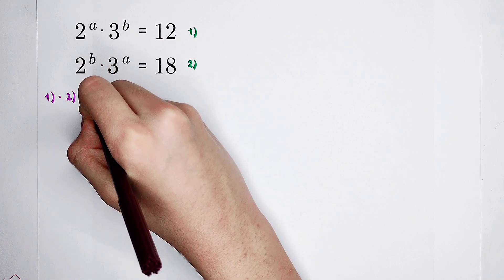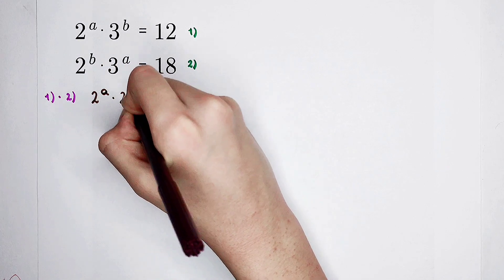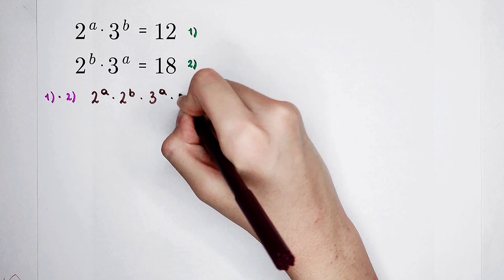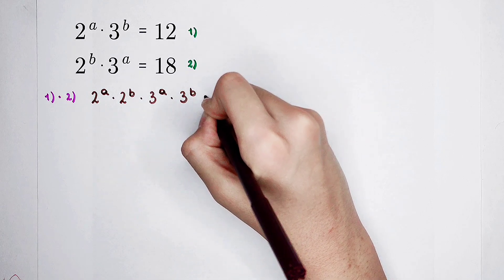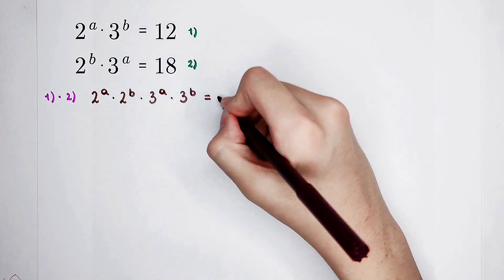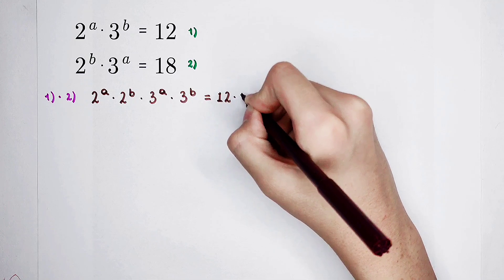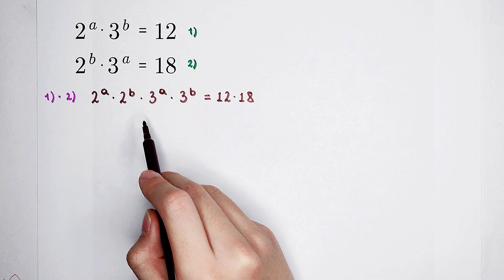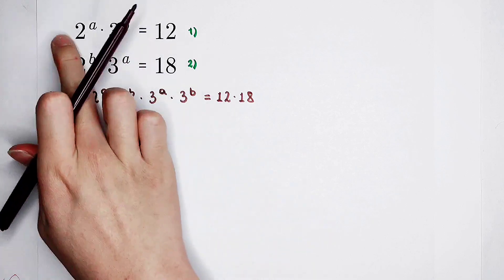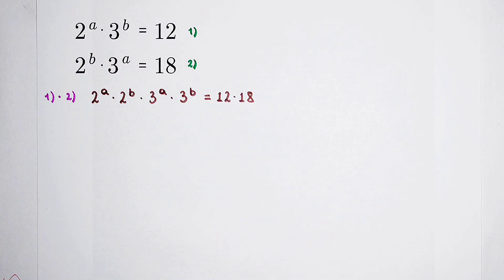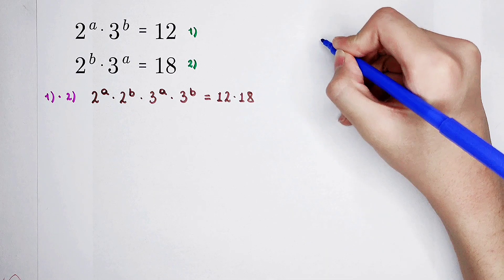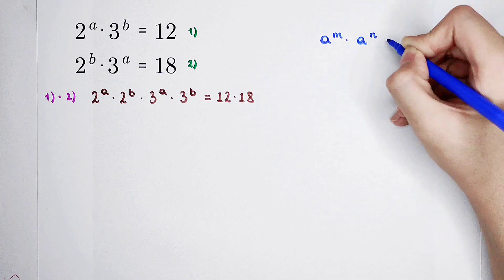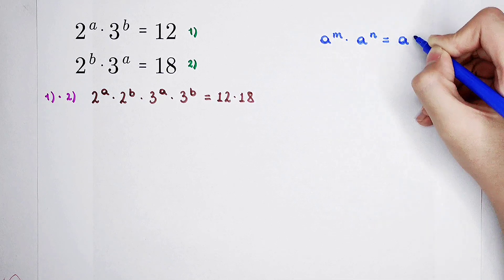That is 2 to the power of a times 2 to the power of b, and then times 3 to the power of b then times 3 to the power of a, which is just 3 to the power of a then times 3 to the power of b, equal to 12 times 18. Using the rule x^m times x^n equals x to the power of m plus n.